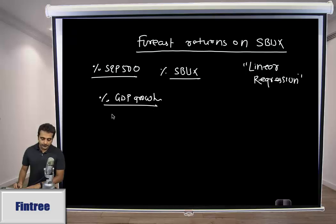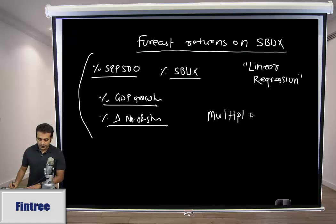Other variables would be maybe something like percentage change in number of stores, which is more stock specific and less on the macro side. Or you could have multiple variables in these lines, and then using all these variables you build a regression. These type of regressions would be referred to as multiple regressions.